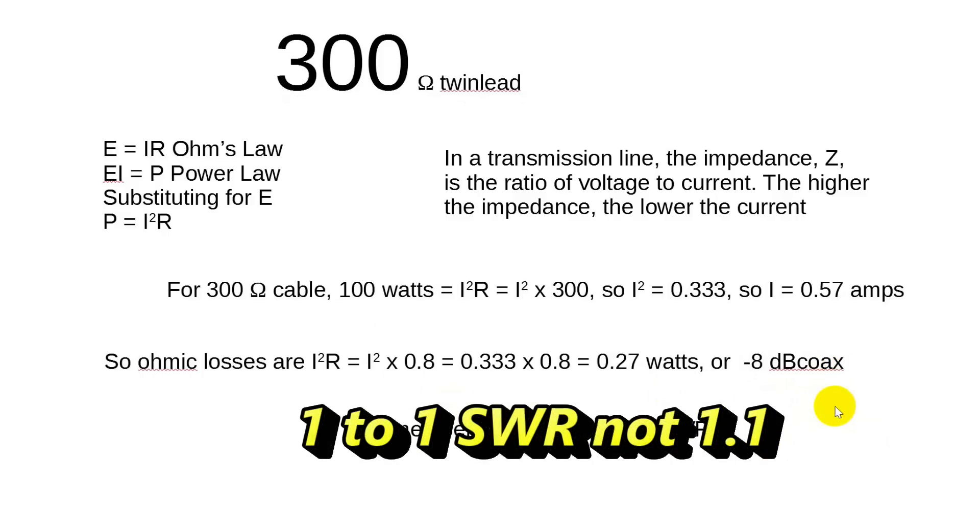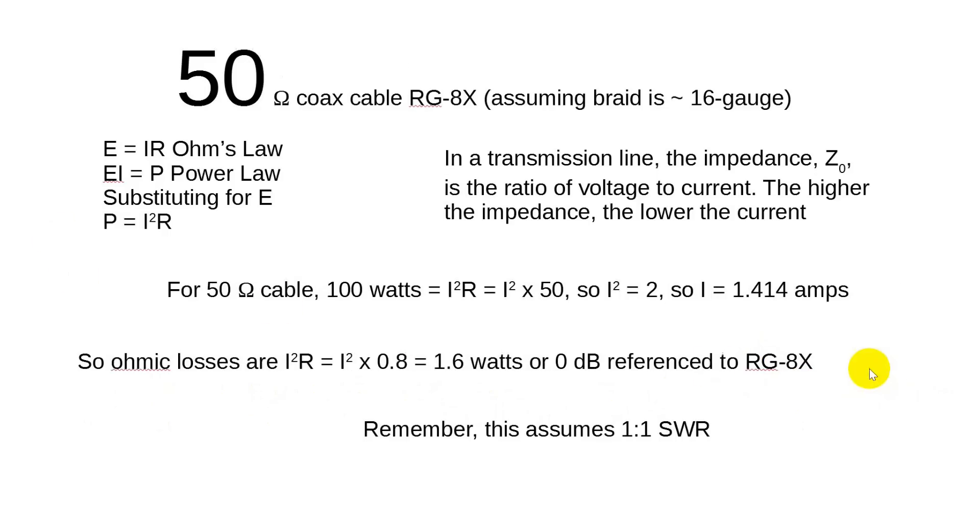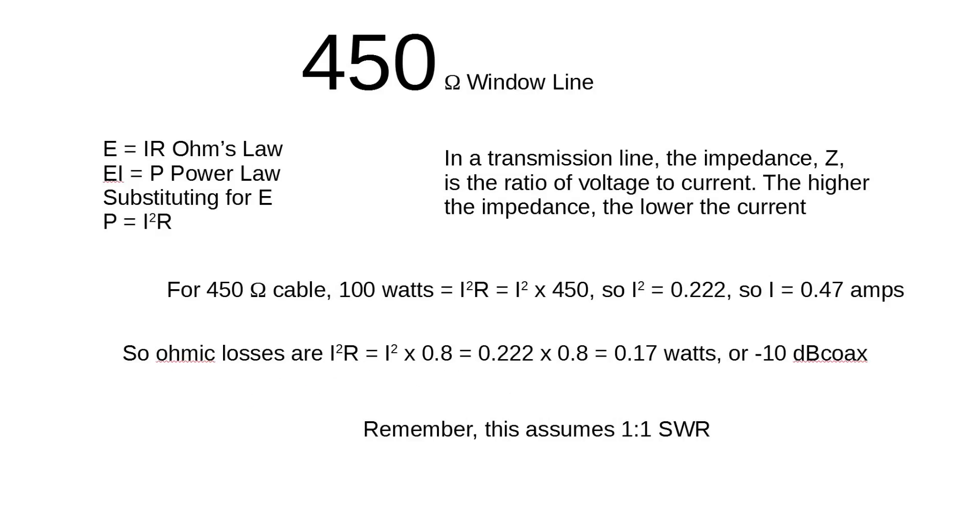That's compared to 1.6 watts. That is 8 dB less loss than the coax due to ohmic considerations. Again, remember, this assumes 1 to 1 SWR. But now you notice something interesting. If you have a mismatch at the antenna, you get power that comes back and power that goes back this way. But each time it's going to lose a little, but overall it's going to lose 8 dB less than you would lose if you were using coax. So it's even more interesting if we go to 450.